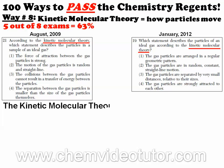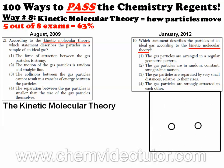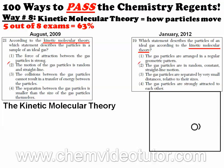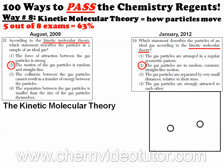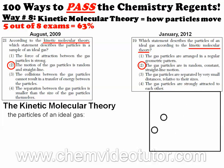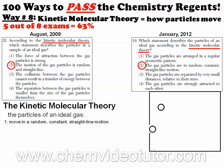Here's some info about the kinetic molecular theory. Can you tell from the way these particles are moving what the answer is? If you guessed choice 2 for both questions, you'd be correct. This is the first part of the theory: the particles of an ideal gas move in random, constant, straight-line motion.